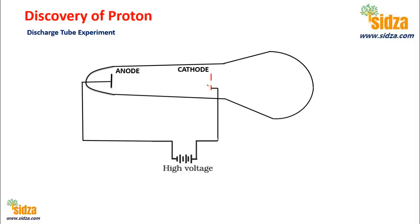What he found was that when a very high voltage is applied in a discharge tube containing gas at very low pressure, some rays come from the anode side and travel towards the cathode in straight lines. Once they reach the perforations, they pass through the holes in the cathode and produce fluorescence on the glass wall, which is coated with some fluorescent material.